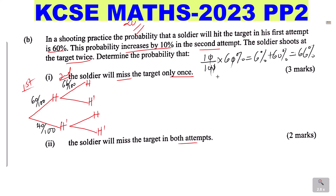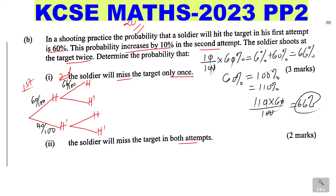Another method: take 60% to be 100%. After an increase of 10%, it becomes 110%. So 110% of 60% gives 66%. So if the second attempt is 66%, then missing the target in the second attempt will be 34%. Here we have 66% and 34%.